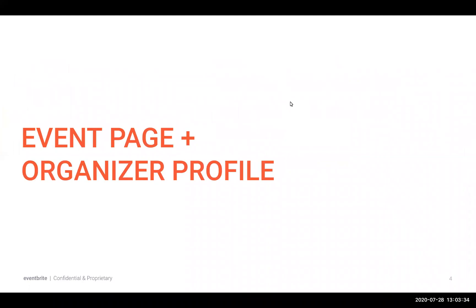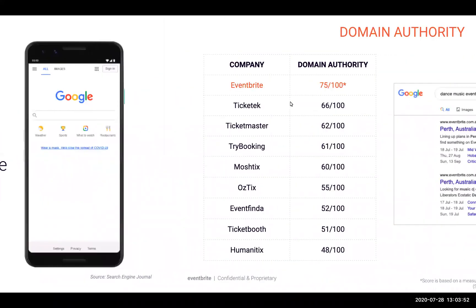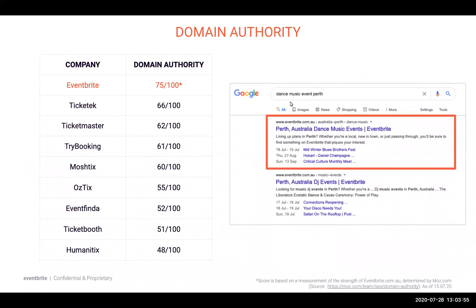First things first: how to set up your event and your organiser profile to make sure you can be discovered online. We know that 93% of online experiences begin with a search engine. So when your attendees are searching for things to do, we want to ensure your events are in their search results. It starts with domain authority, which is an estimate of how well a domain will perform in search results. Developed by Moz, a leading online SEO tool, a domain authority score ranges from 1 to 100, with higher scores corresponding to a greater ability to rank. Eventbrite's domain authority places us at the top with a score of 75 out of 100.